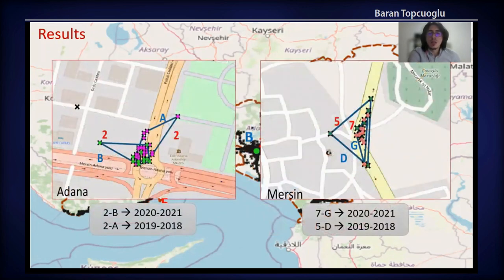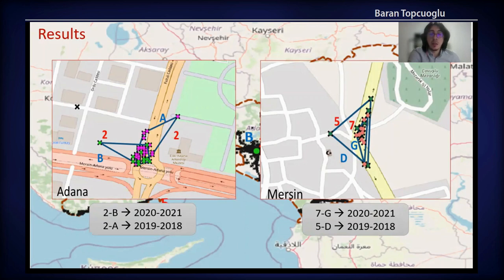In the last example from Adana and Mersin, clusters were detected in the last two-year periods. Especially in Adana, on the left-hand side, accidents were clustered in the same part of a rotary intersection. And in Mersin, the area of the cluster decreases as time passes, although both clusters include the same number of points.